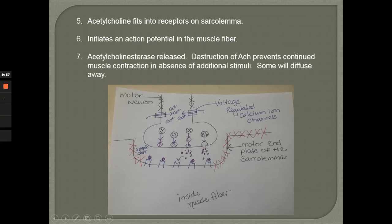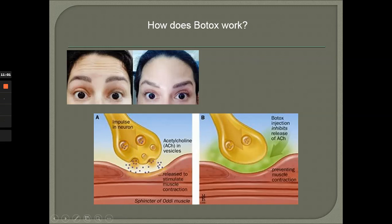Step seven: an enzyme called acetylcholinesterase is released — mostly from the neuron — into the synaptic cleft, and it breaks down the acetylcholine. Some acetylcholine will also diffuse away. The destruction of acetylcholine prevents continued muscle contractions in the absence of a stimulus, ensuring one nerve impulse leads to one muscle contraction. That is how we maintain good control of our muscles.